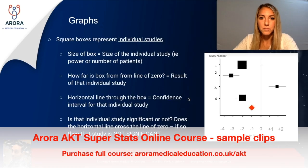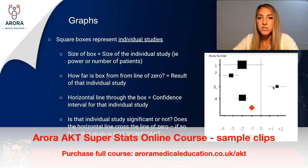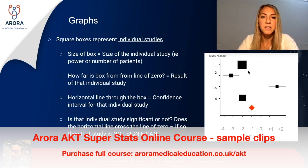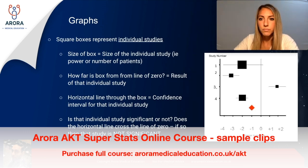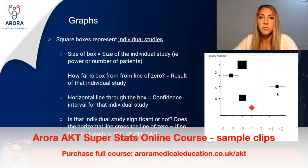Let's start with the boxes. Each box represents an individual study, and the size of the box represents the size of that individual study. The bigger the box, the bigger the power of the study — so the larger the number of patients involved. Study one had the largest number of patients and study three had the smallest.